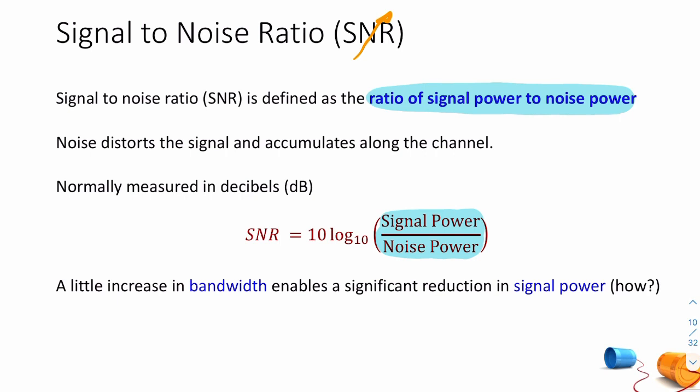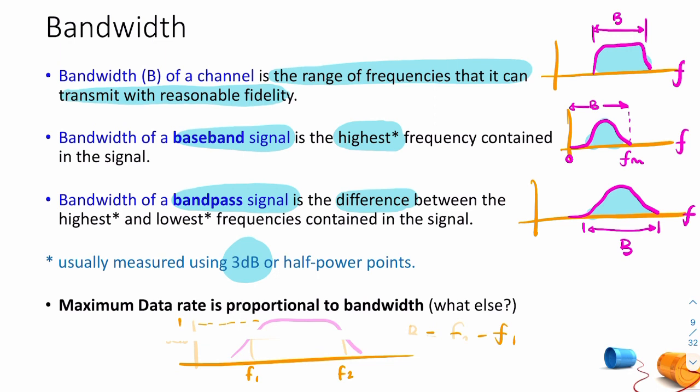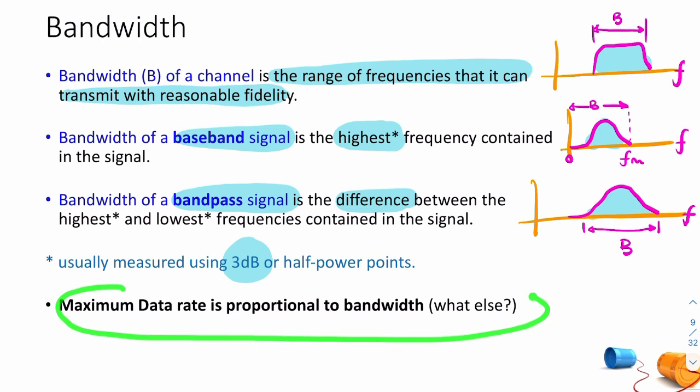Often in engineering, where we're interested in these ratios, we look at an exponential representation — we take the log of that ratio. The SNR is defined as 10 times log base 10 of the signal power to the noise power. This is really important. The maximum data rate is proportional to the bandwidth — the wider the bandwidth of the channel, the faster the possible data rate. This is related to something we'll talk about much later in the semester, called channel capacity.